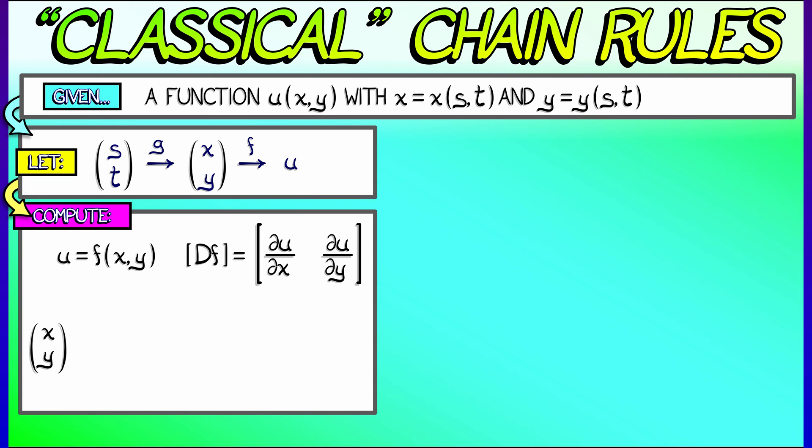Now, what about the function g that takes s and t to x and y? Well, the derivative of g is going to be a 2 by 2 matrix. That is, the partials with respect to s in the first column and the partials with respect to t in the second column.